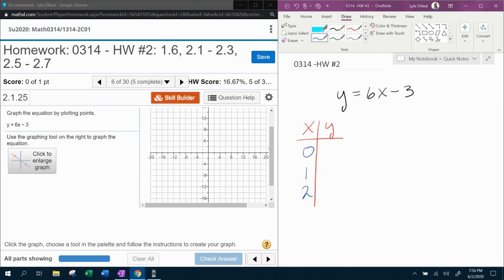You can pick anything you want. I just decided for 0, 1, and 2, just because I felt like it. We'll see if those plug in and work and give us points that we can actually plot.